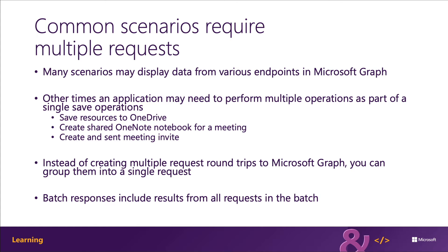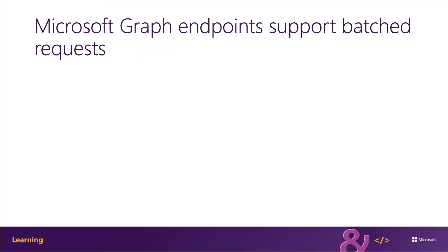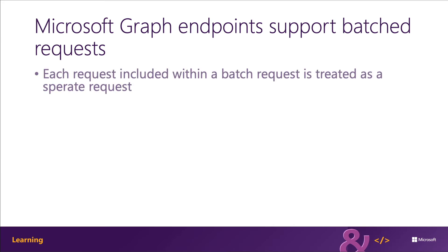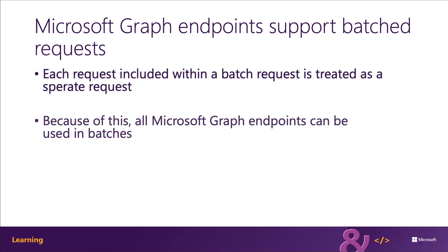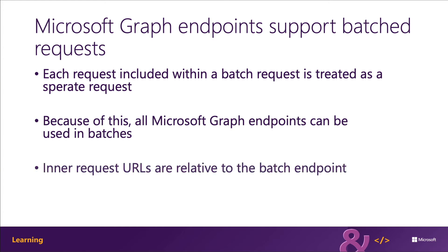Requests within a batch aren't special requests — they're just like any other requests that you would submit. So all endpoints and resources that are exposed by Microsoft Graph can support batching. And when you submit batching requests, all URLs within the request should be relative to the root of the version of the Microsoft Graph REST endpoint.